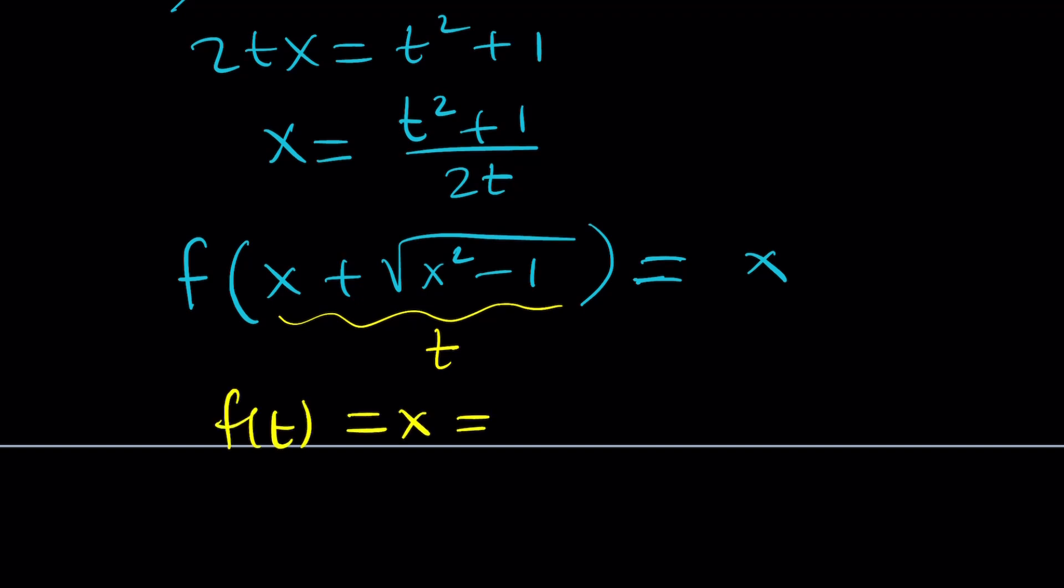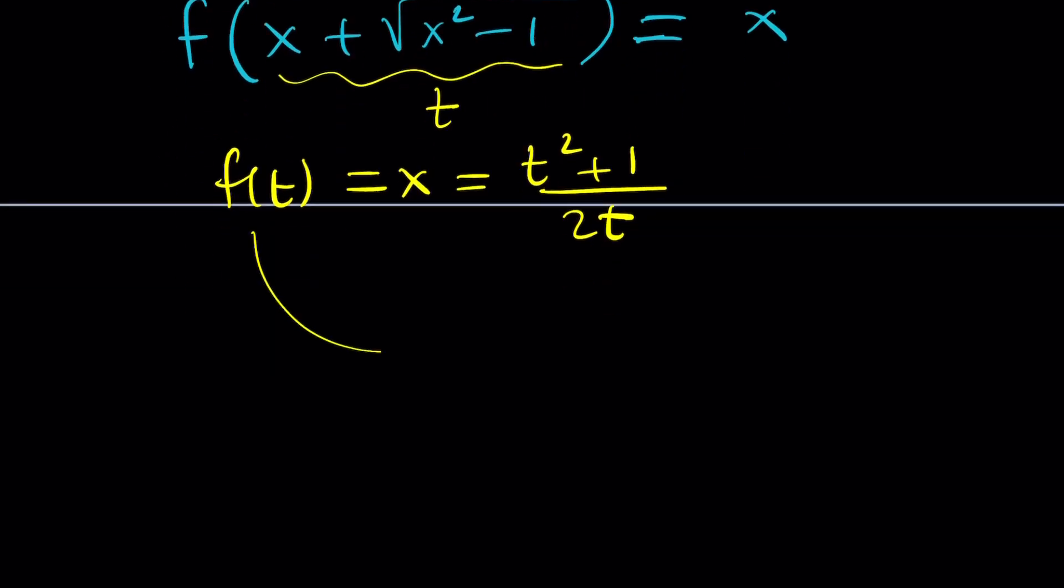But x is now written in terms of t, which is good. And now I can replace x with t squared plus 1 over 2t. And I forget about the x in the middle. I got something for f of t. So let's rewrite it. f of t equals t squared plus 1 divided by 2t.